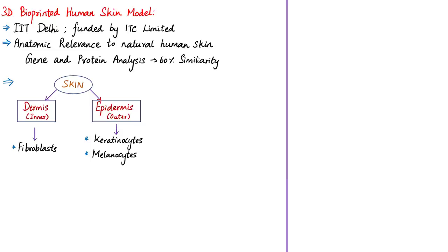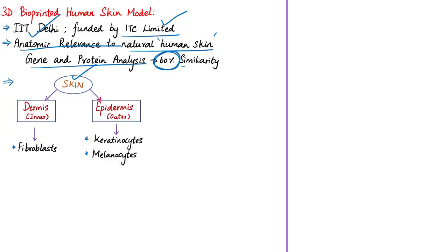Researchers at IIT Delhi have successfully developed a 3D bioprinted human skin model. This development was published in the journal Bioprinting and funded by ITC Limited. The bioprinted human skin model is already being used by ITC Limited for experiments. It has anatomic relevance with structural, mechanical and biochemical features similar to native human skin, and gene and protein expression analysis showed 60% similarity in gene expression between bioprinted and actual human skin.